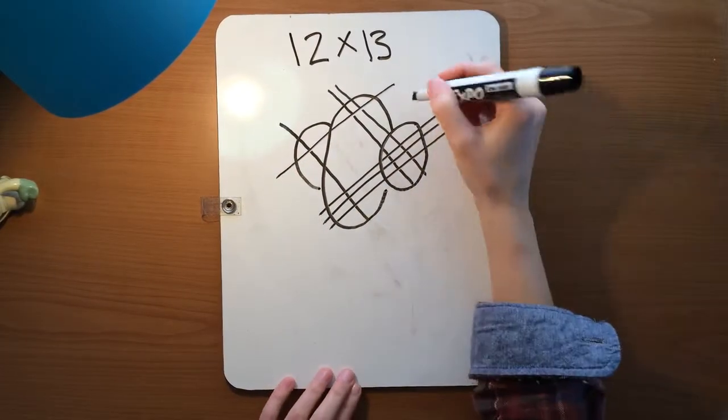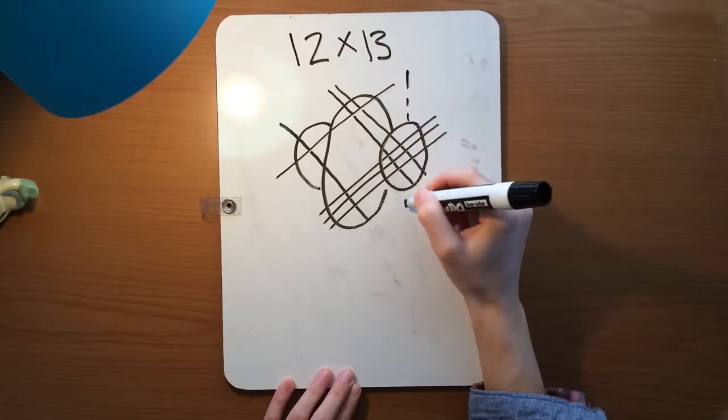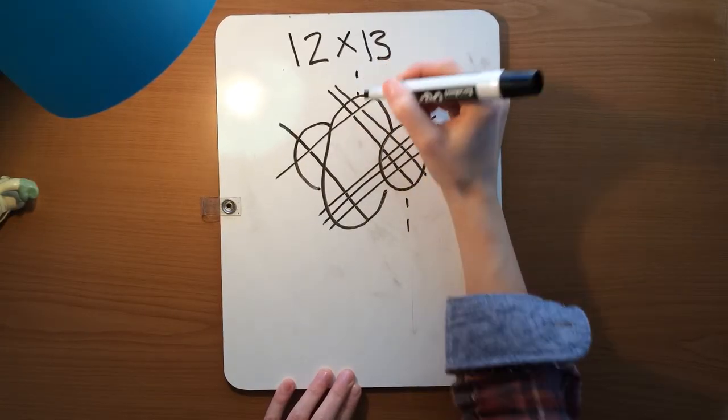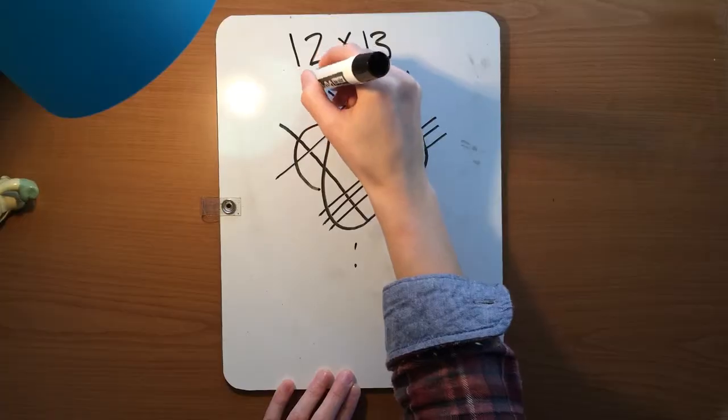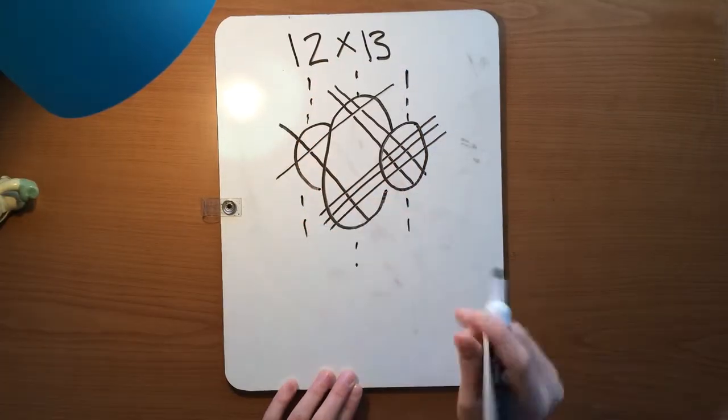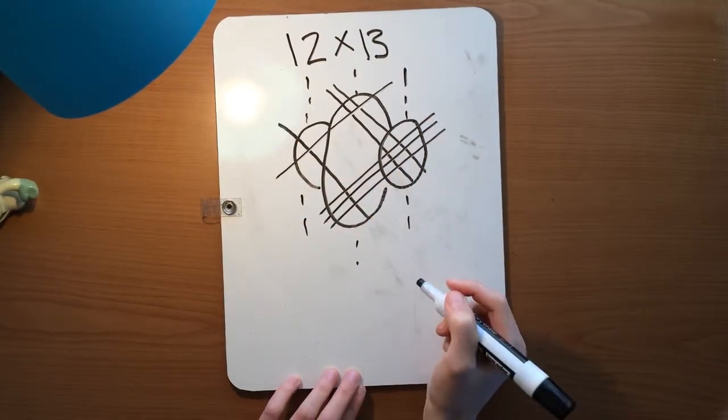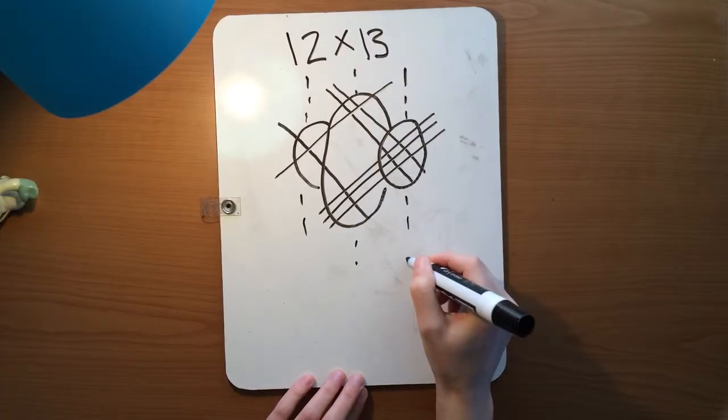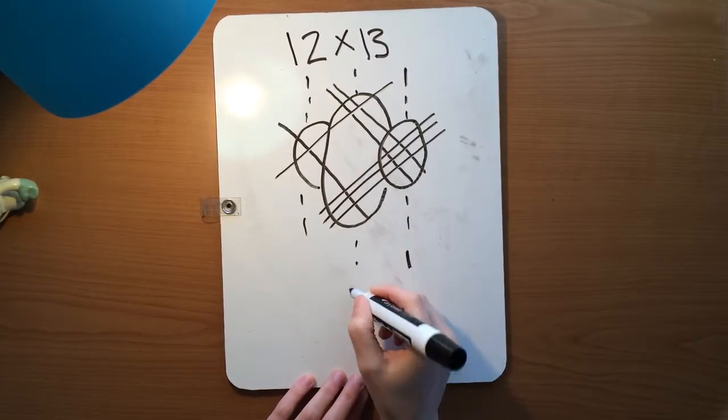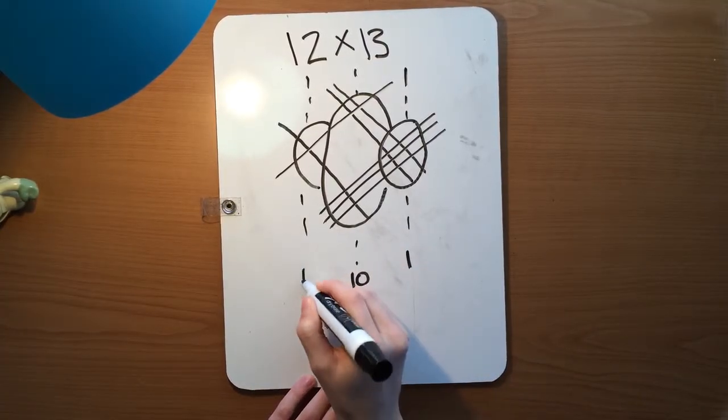For me, it was helpful to think of them in vertical lines. It may help you, it may not. But for me, each of these lines represents a place value. So this first line would be the ones place, the second would be the tens, and the third would be the hundreds.